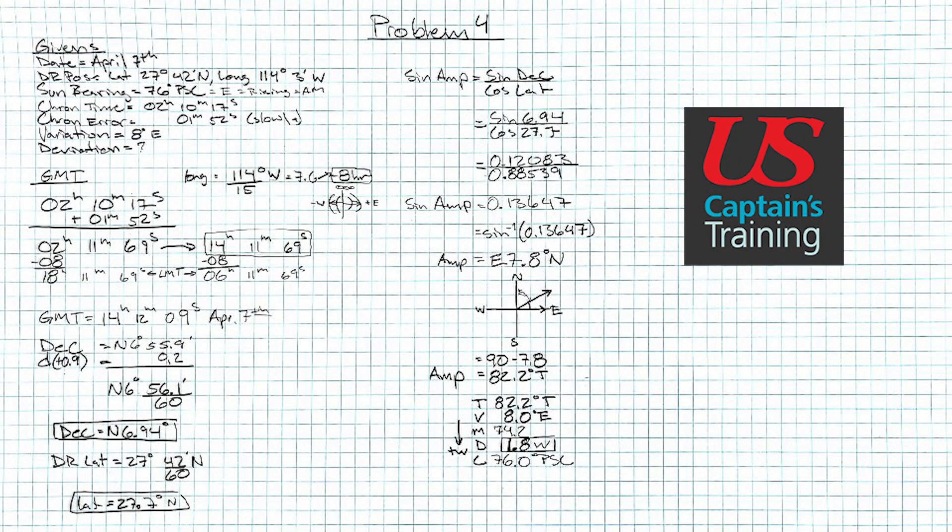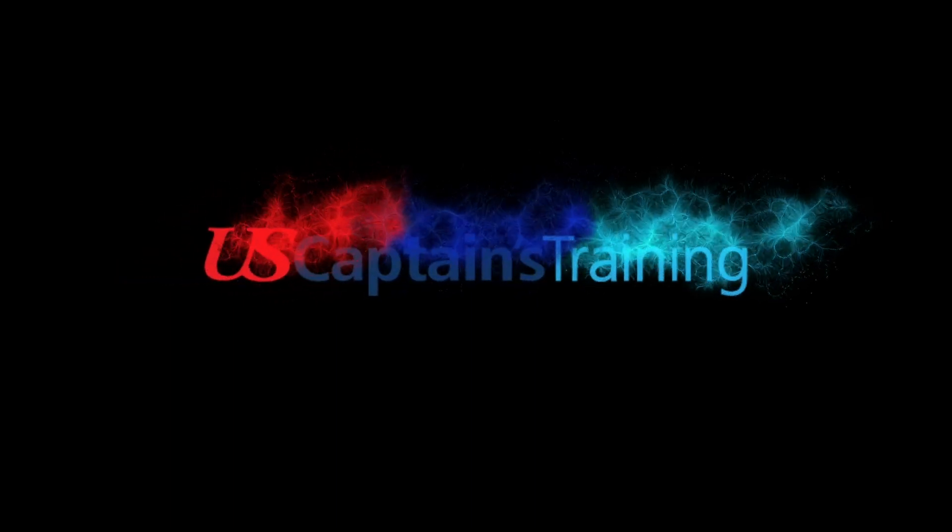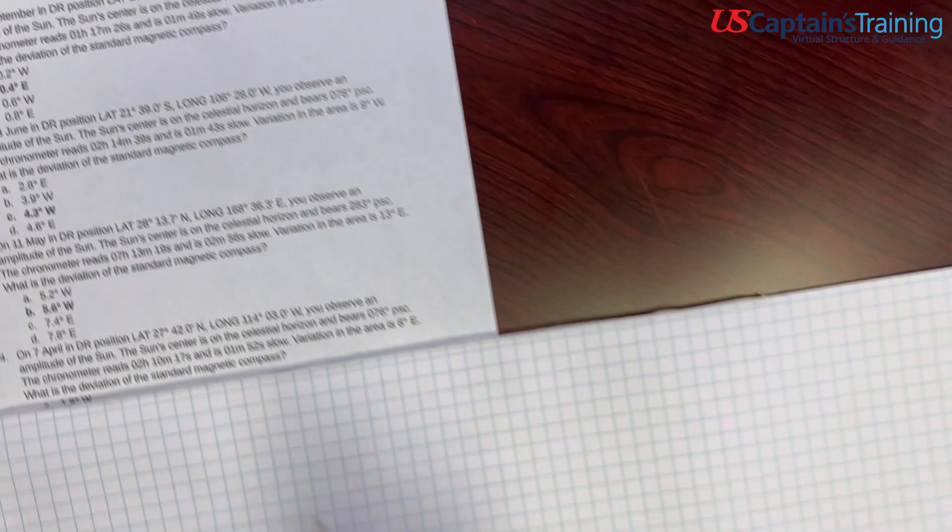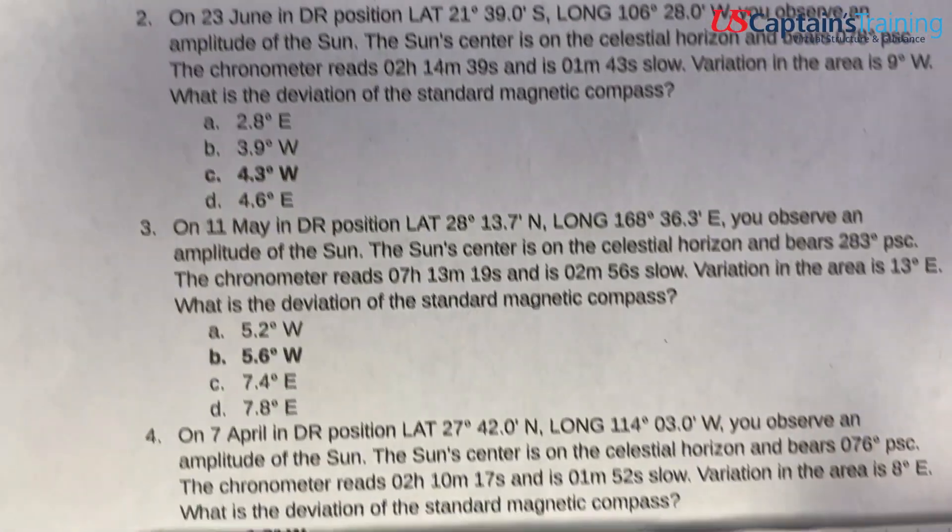Hey, Neil Smith here with U.S. Captains Training. You are looking at Amplitude practice problem four. One notable part of this problem is that you need to add 12 hours to your corrected crime time in order to get the proper GMT. That's about all for this one. Enjoy the process.